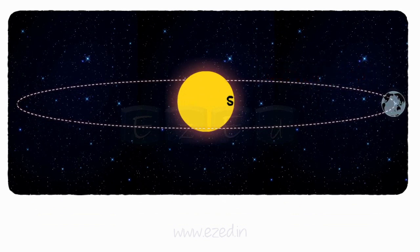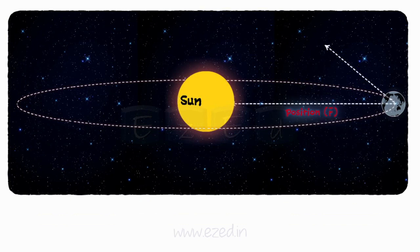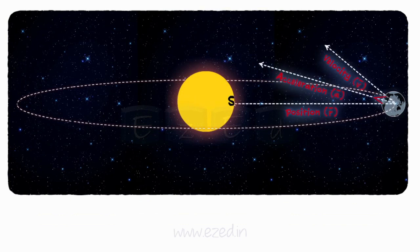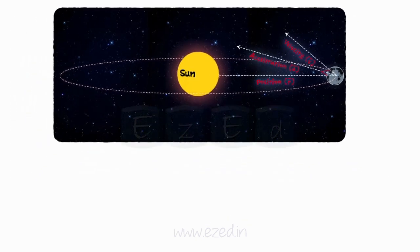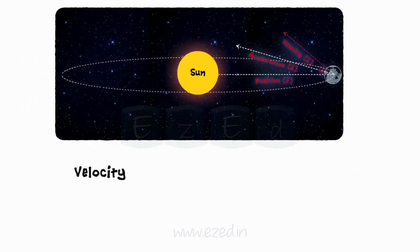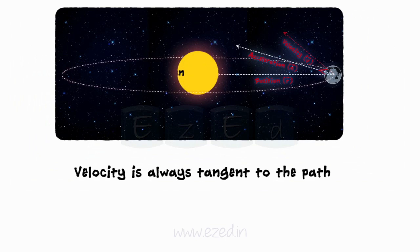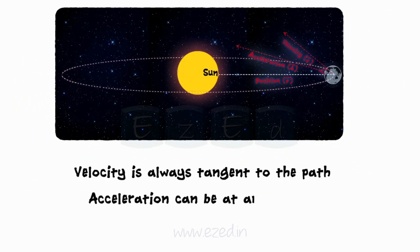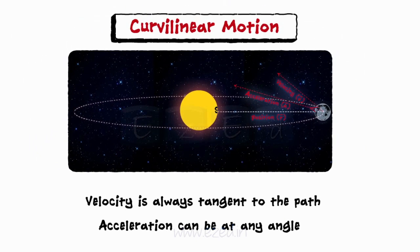In curvilinear motion, the position, velocity and acceleration are represented in vector form. The velocity vector is always tangential to the position of the point. The acceleration vector can be at any angle.